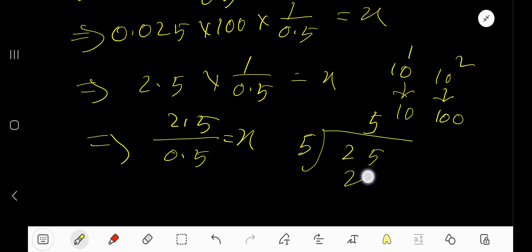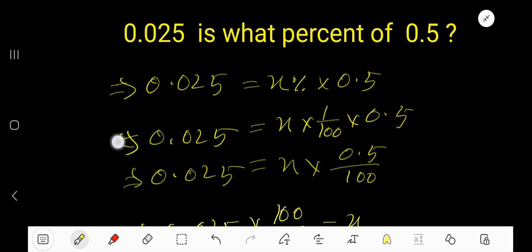5 times 5 is 25, so our answer is 5. X equals 5. So 0.025 is 5 percent of 0.5.